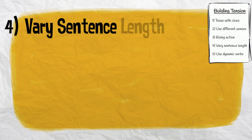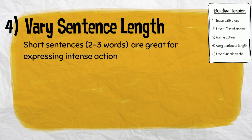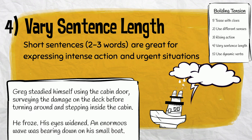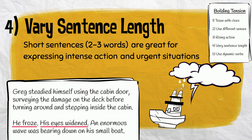Number four: vary sentence length. Short sentences — those only two or three words long — are great for expressing intense action and urgent situations. They can be particularly effective when used after a longer sentence. Here's an example: "Greg steadied himself using the cabin door, surveying the damage on the deck before turning around and stepping inside the cabin. He froze. His eyes widened. An enormous wave was bearing down on his small boat." Can you see how the use of short sentences adds a dramatic emphasis?